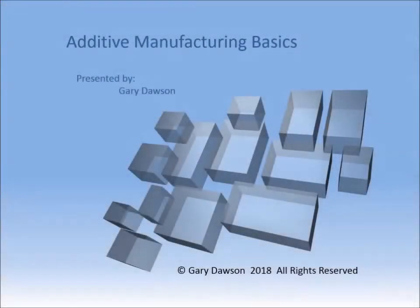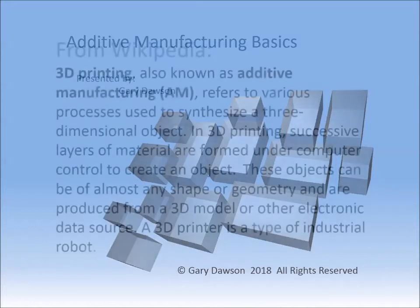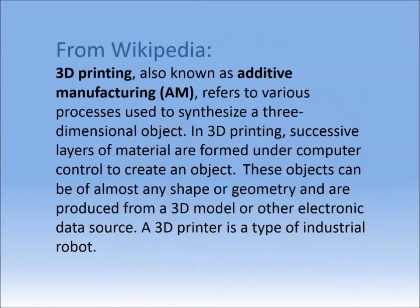Hi, I'm Gary Dawson and I made this presentation to give you an overview of various types of 3D printing in use. 3D printing is known in the professional world as additive manufacturing. Wikipedia refers to additive manufacturing as various processes used to synthesize a three-dimensional object. In 3D printing, successive layers of material are formed under computer control to create an object. These objects can be of almost any shape or geometry and are produced from a 3D model or other electronic data source.